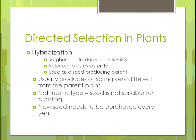For hybridization in sorghum, male sterility is introduced — creating something sterile used as a way to produce the parent. It usually produces offspring very different from the parent plant, so it may not be suitable for replanting. New seeds must be created every year — one of the key differences from open-pollinated varieties. If you took corn from cobs in the field and tried to plant it, you would not get the same type of plant.